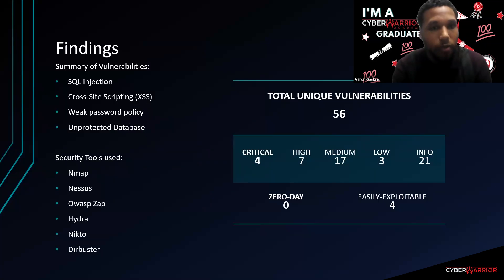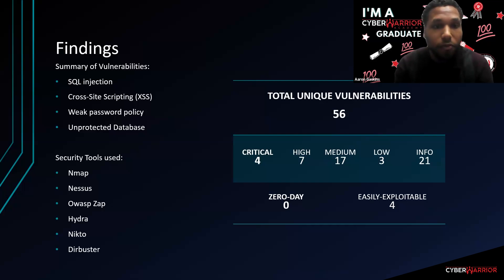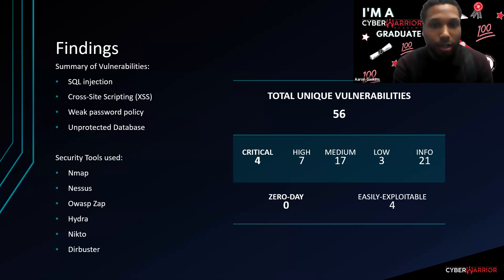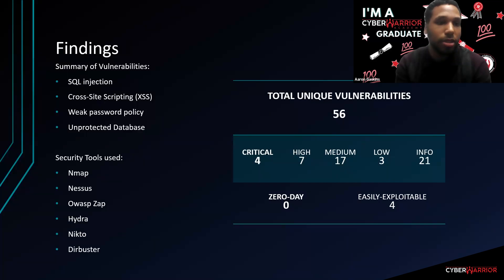When we ran our scanning tools on the site, we found 56 unique vulnerabilities. Four of them are critical. Four can be easily exploitable, and that is bad. A summary of those vulnerabilities found was a SQL injection, cross-site scripting, weak password policy, and unprotected database.